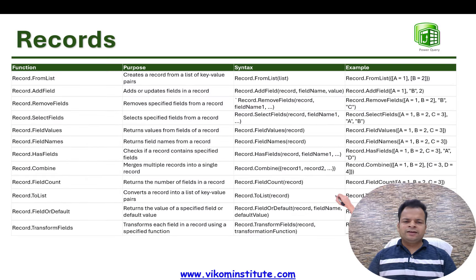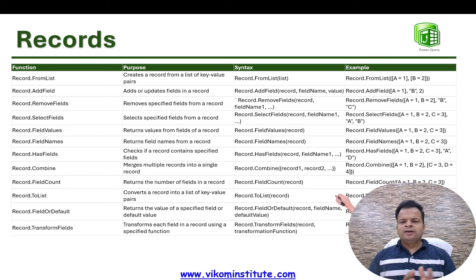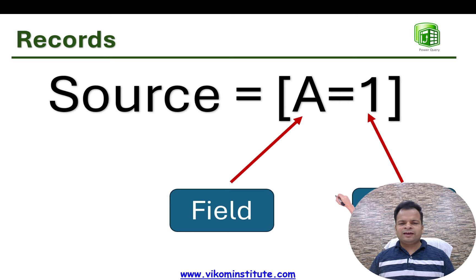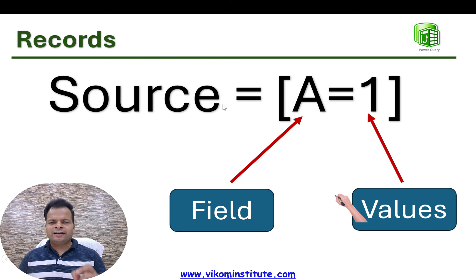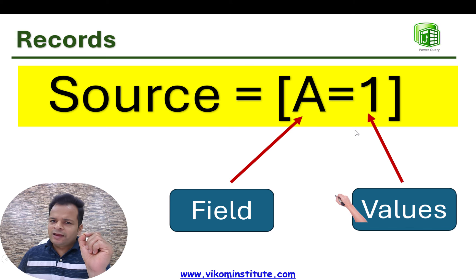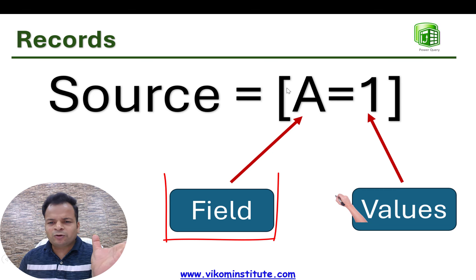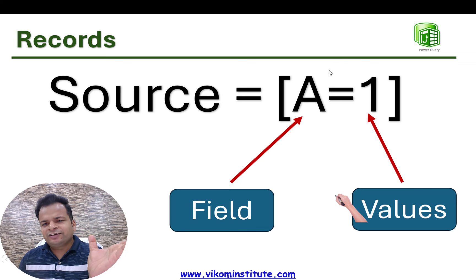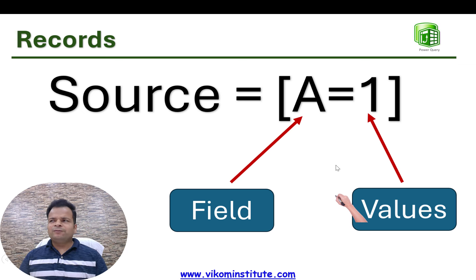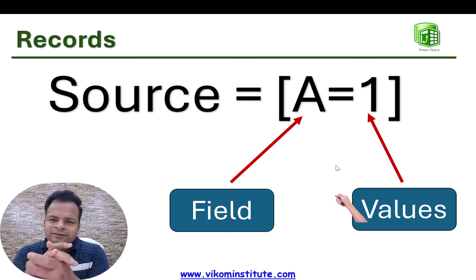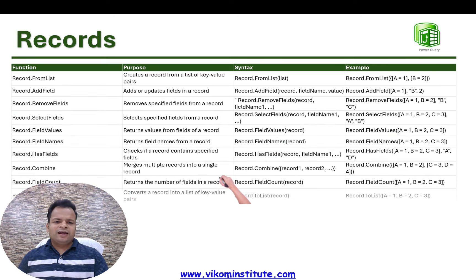In this video, we are going to learn how to use record functions in Power Query. Let me talk about what a record is. Here we have a simple record: source = [a = 1]. In record terms, the left side of the equals sign is called a field, and anything written to the right side is called a value. This concept will help you understand the record functions.